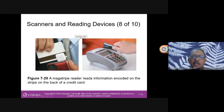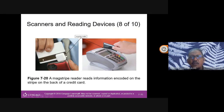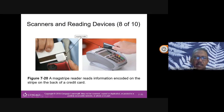Magstripe readers read information encoded on the stripe on the back of a credit card. Credit cards used to use this, but many have moved away because magstripes wear out easily and are easier to duplicate compared to chips. Chips are more secure.